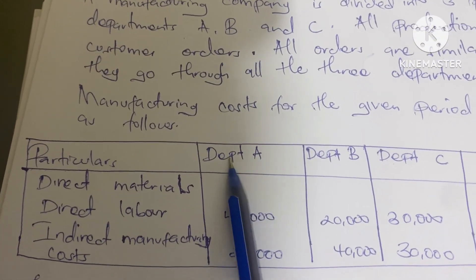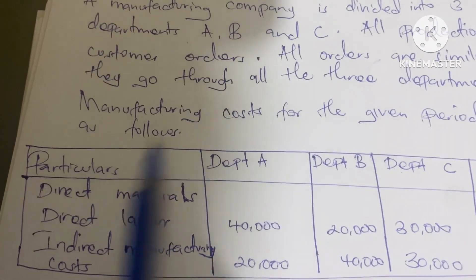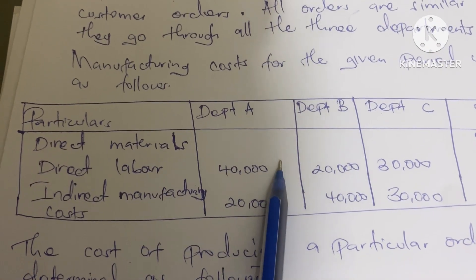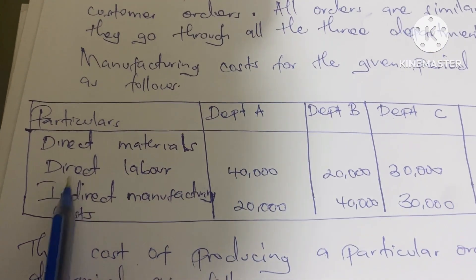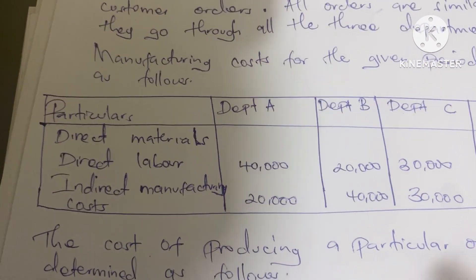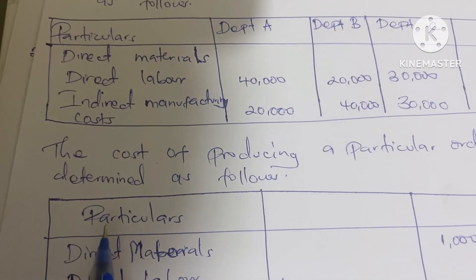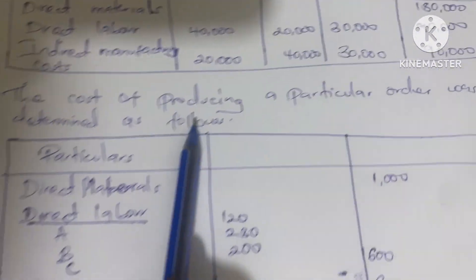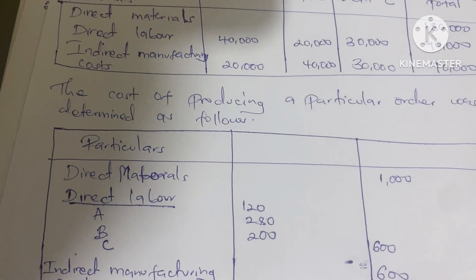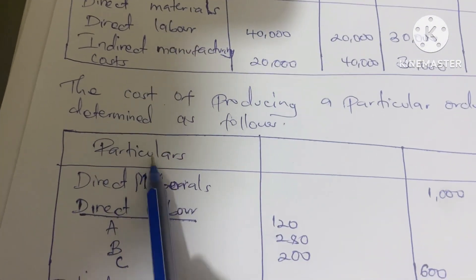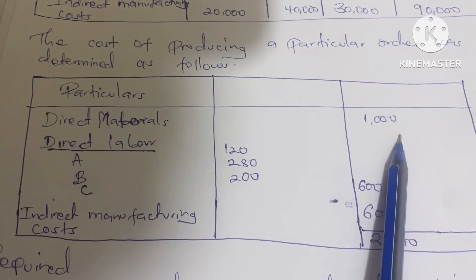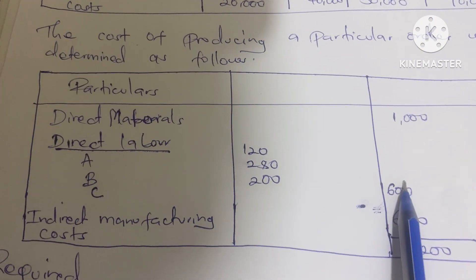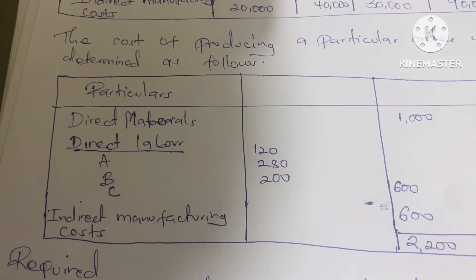The manufacturing costs for the given period are shown with department A, department B, department C, and the total. We have direct materials total, direct labor for departments A, B, and C with their total, and the indirect manufacturing costs. The cost of producing a particular order was also determined — direct materials are one thousand, and direct labor for A, B, and C are given with the total shown.